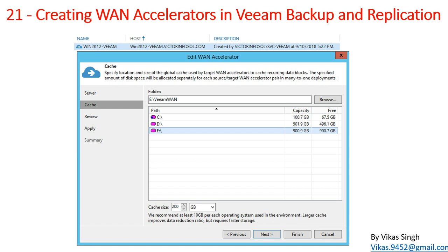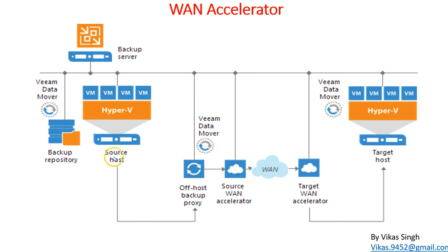We can configure a WAN accelerator in Veeam Backup and Replication and define the cache location where all the data that is going to be transferred from one backup server to another target backup server will be stored locally. The WAN accelerator is going to limit, handle, and manage your data transfer from one proxy to a second proxy server.